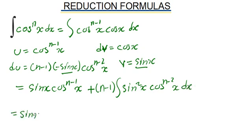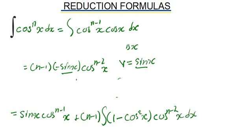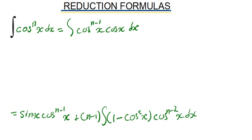So this becomes sine of x cosine to the n minus 1 of x plus n minus 1 times the integral of, I'm going to express this in terms of the identity that has to do with cosine. So this is simply equals to 1 minus cosine squared of x, then open bracket cosine to the n minus 2 of x dx.